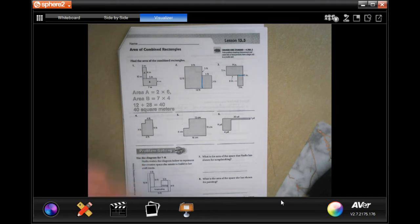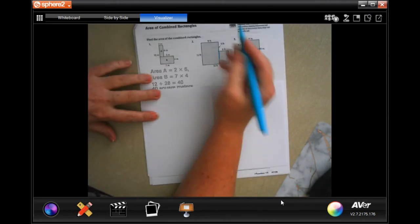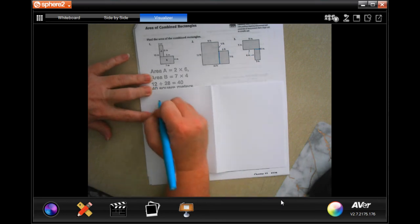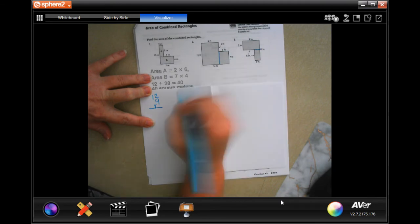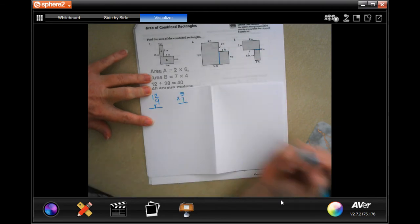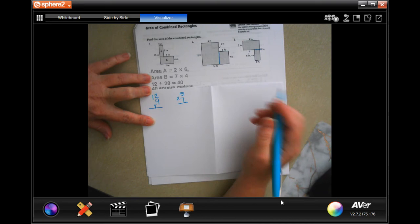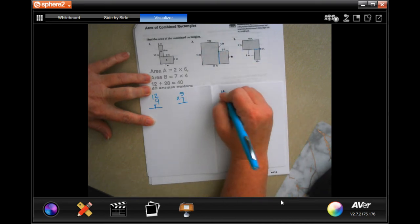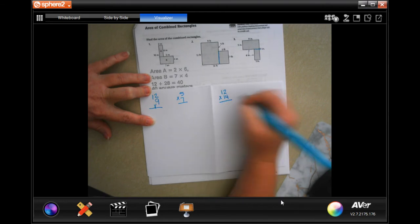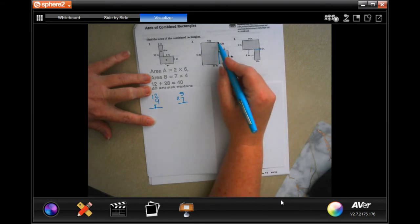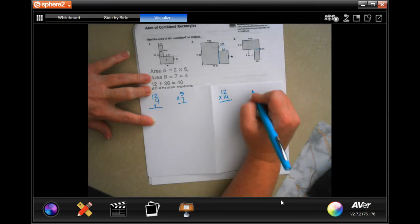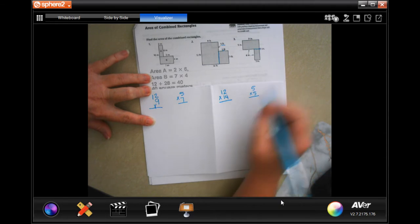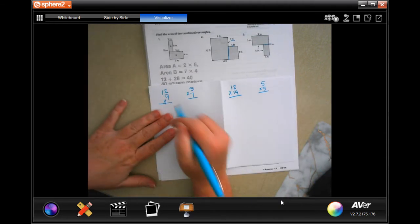We can do 9 by 12 and 5 by 7 and we can add those up. Or we can do 12 by 14 and then we can take away the 5 by 5 that is cut out, telling us it's 5 feet by 5 feet. Typically it's easier to add than it is to subtract.